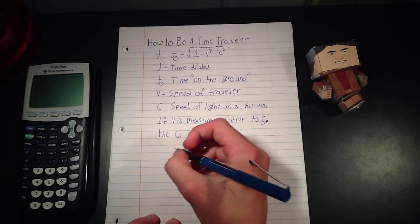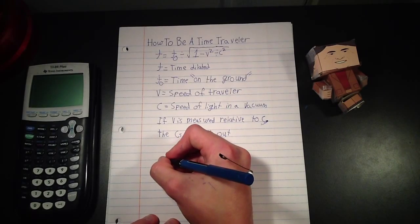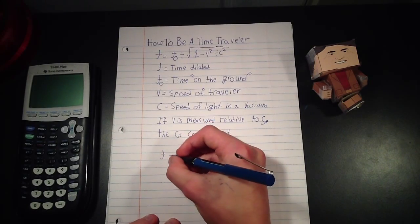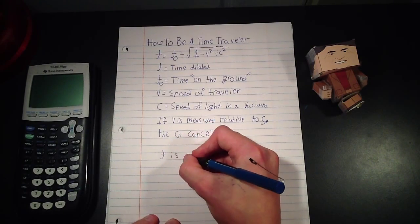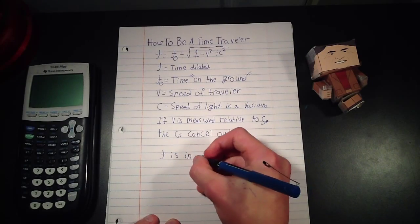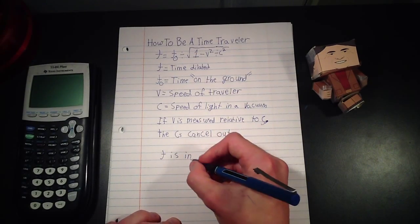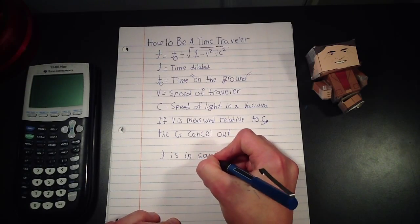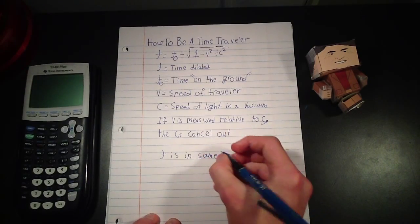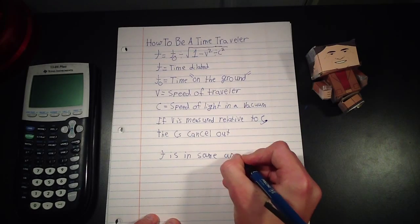Okay, and the last one is very important: the time dilated is in the same units as time on the ground. So that's something to keep in mind when you're doing this.